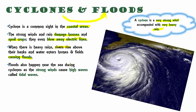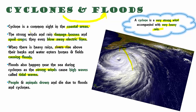Floods also happen near the sea during cyclones because very strong winds cause very high waves. These winds push all the water towards the seashore, carrying water onto the shore. These are called tidal waves. Because of cyclone and floods, people as well as animals die, and there is a lot of damage caused to life as well as property.